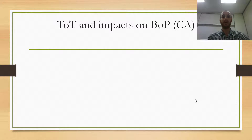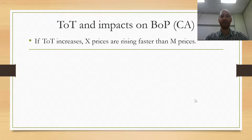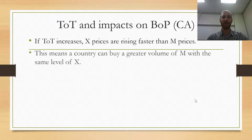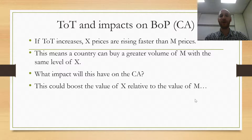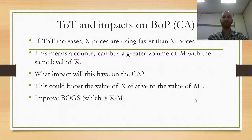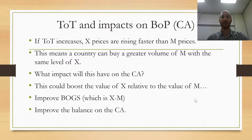Let's look at the terms of trade and how it affects the balance of payments — it's especially relevant for the current account. Firstly, if the terms of trade increases or improves, export prices are rising faster than import prices. This means that a country can buy a greater volume of imports with the same level of exports. It could boost the value of exports relative to the value of imports, then improve BOGS — which is exports minus imports — and in turn improve the whole balance on the current account.